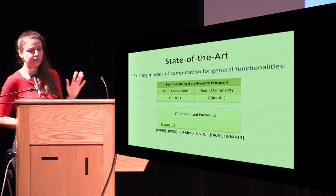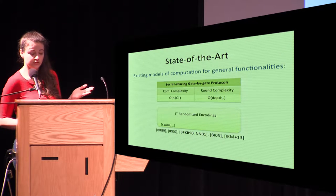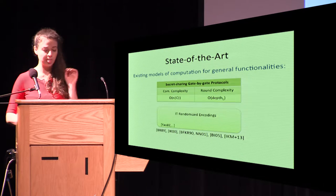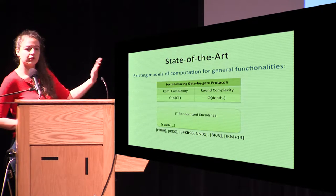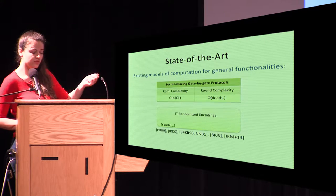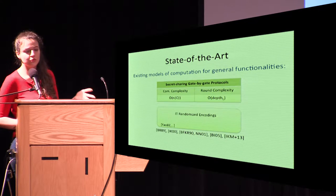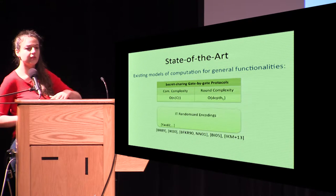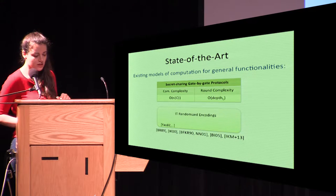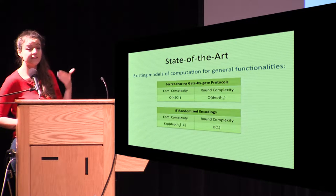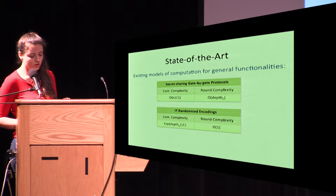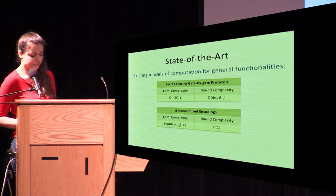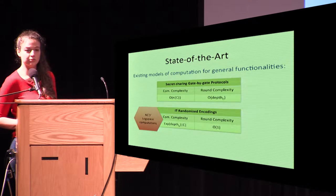If we prioritize being efficient in the circuit size of the evaluated function, we do have constant-round protocols. For example, consider Yao in the information-theoretic setting, where instead of symmetric encryption we use one-time pads. But every level doubles the size of the one-time pad, so complexity becomes exponential in the depth. These protocols are only efficient in the branching program size — good only for NC1 or log-space computations.